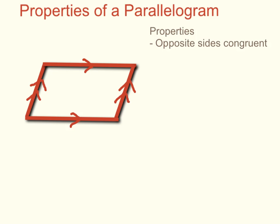The first property is that not only are the opposite sides parallel, but they are congruent to one another. So therefore, this side is equal to this side, and I can mark them accordingly with the same type of marking. And also, this side is congruent to this side.